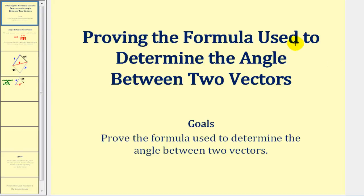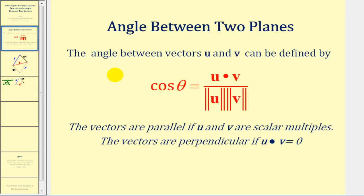Welcome to a video that will prove the formula used to determine the angle between two vectors. Let's first review the formula. If u and v are our two vectors, then the angle theta between the two vectors can be defined by cosine theta equals u dotted with v, divided by the magnitude of u times the magnitude of v.